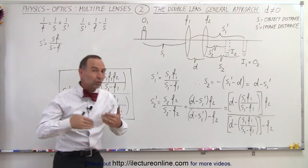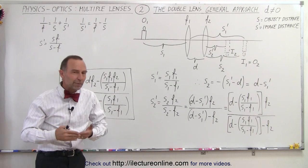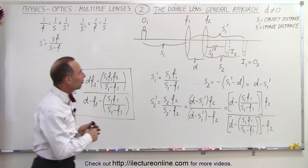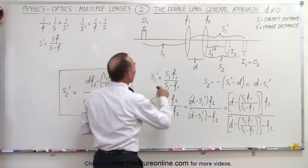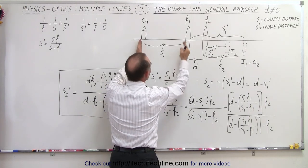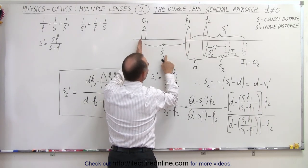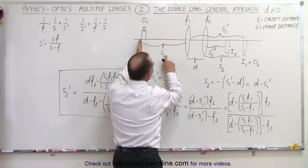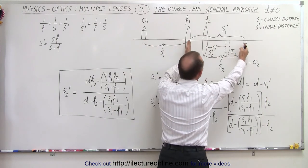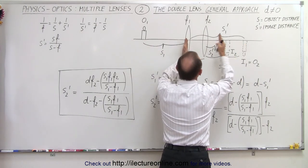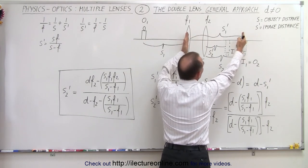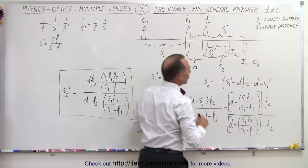Since there are two lenses, there are going to be two objects and two images. The object distance from our first object to our first lens is called s1. We then assume that's going to form an image, and the distance from our first lens to the first image is going to be s1'.